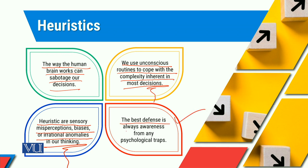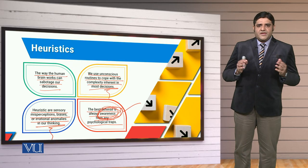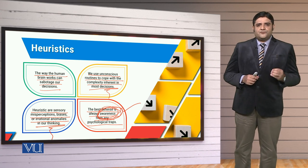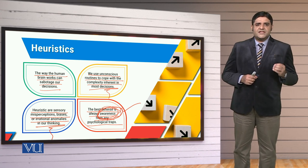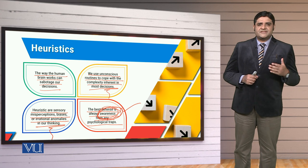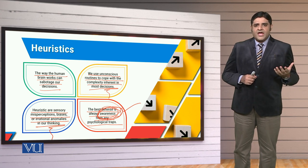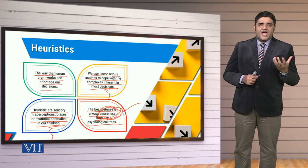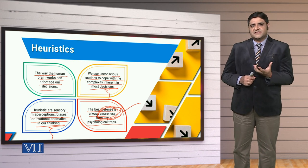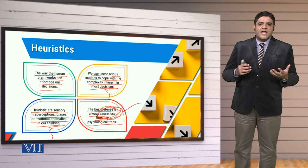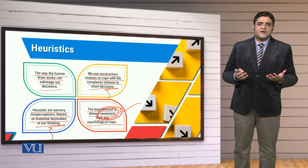Last but not the least, the best defense is always awareness from any psychological trap — and that is the same awareness jis ke baare mein hum apne emotional intelligence ke inder discussion karte hain. Being a mindful leader, humain bohut careful rehna padega apne emotional intelligence ke perspective mein. Humein apni self awareness ko bruekar lana hai, self control sikhna hai, empathy, motivation aur social intelligence ka sahara lena hai. Tabhi hum apne heuristics ko overcome kar payenge.